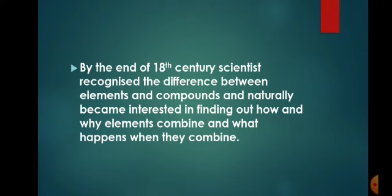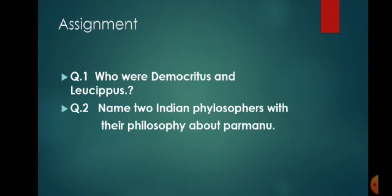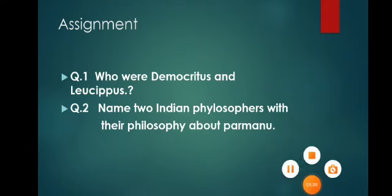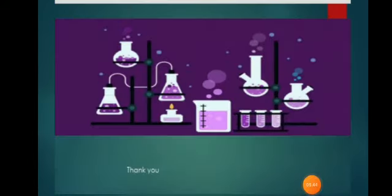So I am giving you one assignment. Question 1: Who were Democritus and Leucippus? Question 2: Name two Indian philosophers with their philosophy about Parmanu. Note that Democritus and Leucippus were not Indian — that is your hint. Thank you, students.